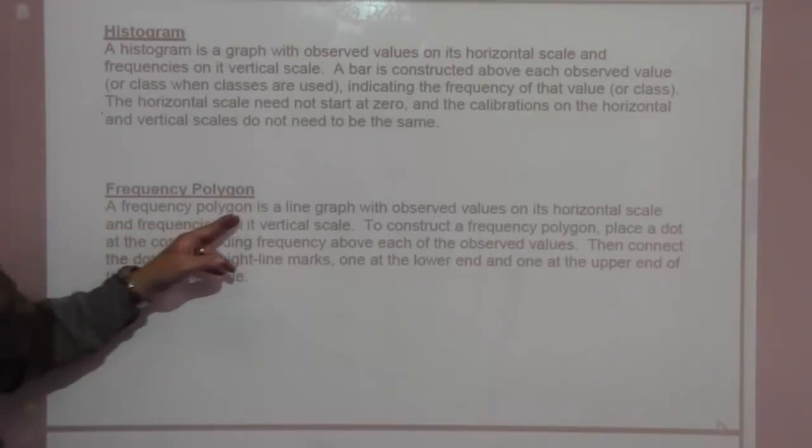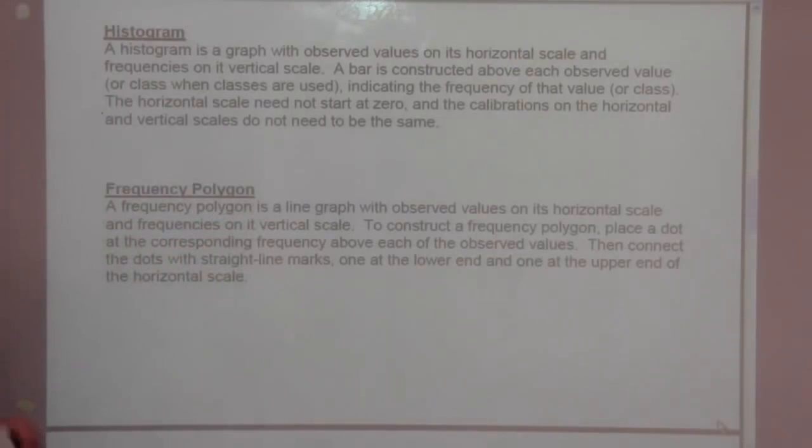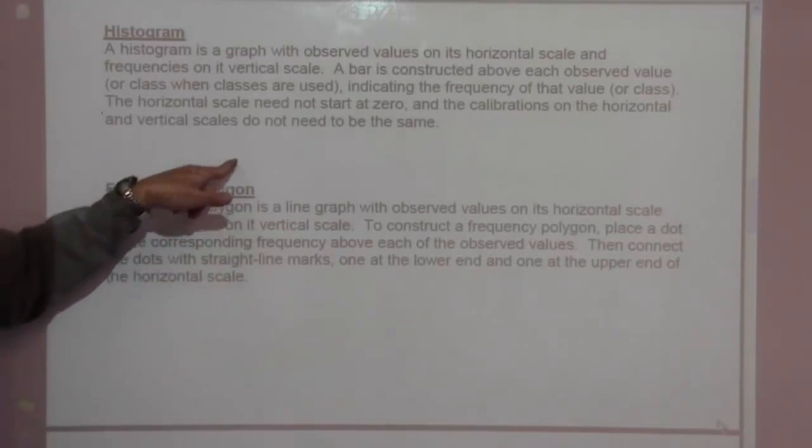Frequency polygon. A frequency polygon is a line graph with observed values on its horizontal scale and frequencies on the vertical scale, so you put dots.